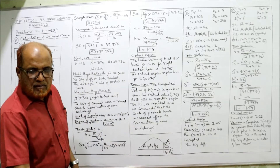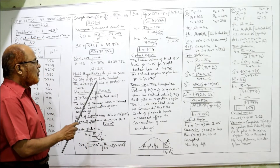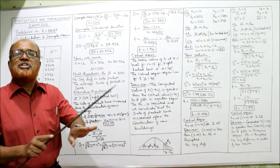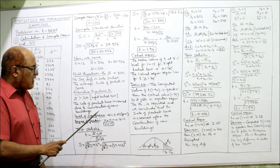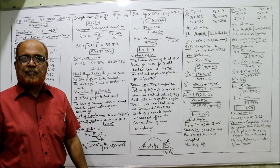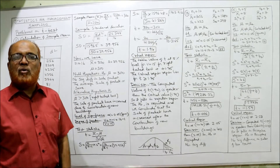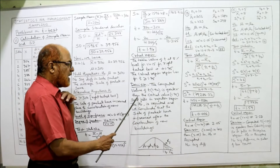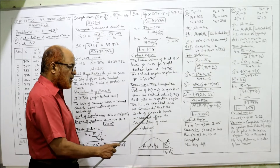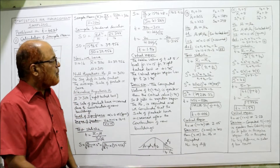Since 1.94 falls in the rejection region, we reject the null hypothesis. The null hypothesis stated no significant difference — that sales remain the same even after construction. By rejecting H₀, we accept the alternative hypothesis: the sales of lunch packets have increased. The computed value of t, 1.94, is greater than the critical value 1.75, so null hypothesis is rejected and we conclude that the sale of packets has increased after the construction of the new building. This is Problem 11.